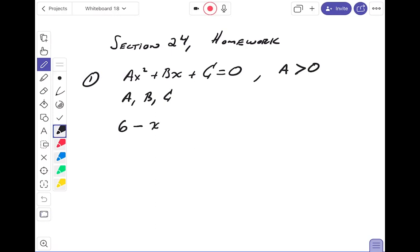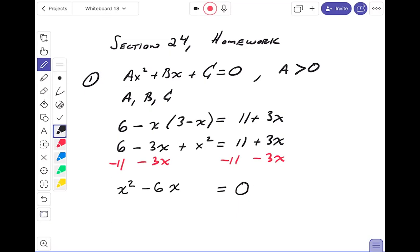Let's take a look at it. Six minus x times three minus x equals 11 plus three x. It's clearly not in the form that they want. First of all, I don't have a zero on one side. So I'm going to simplify each side separately. What do you get? Six minus three x plus x squared equals 11 plus three x. I still don't have the zero and I don't have it in the proper order either. I'm going to subtract three x from both sides and subtract 11 from both sides.